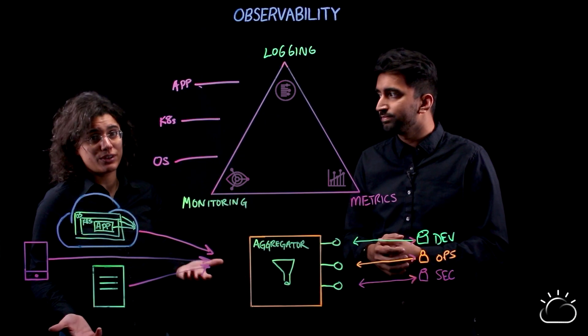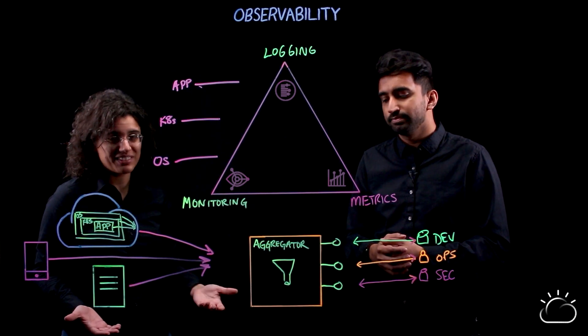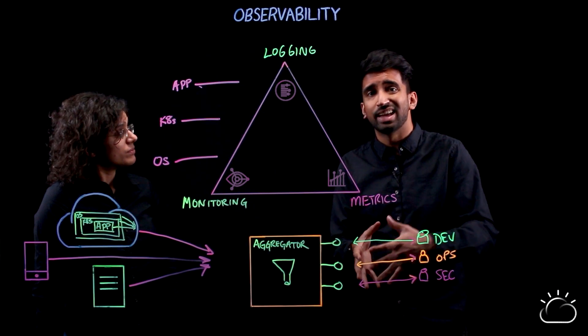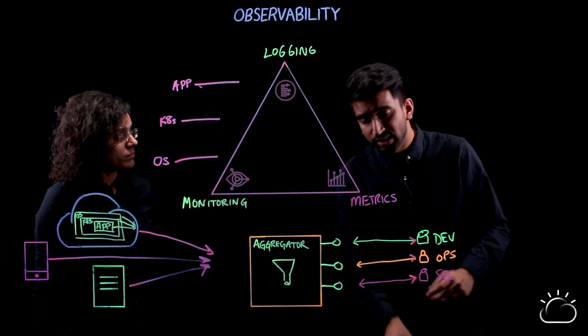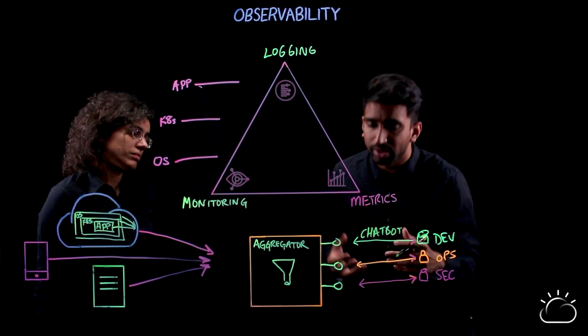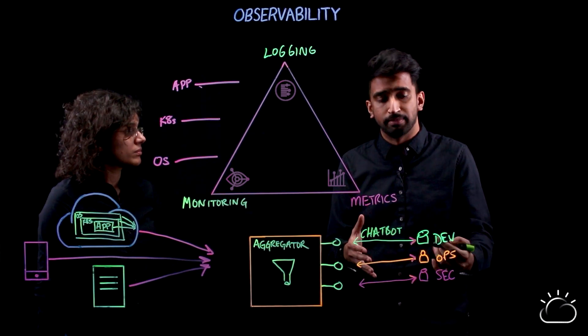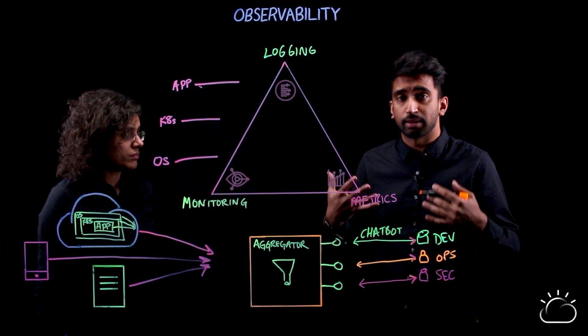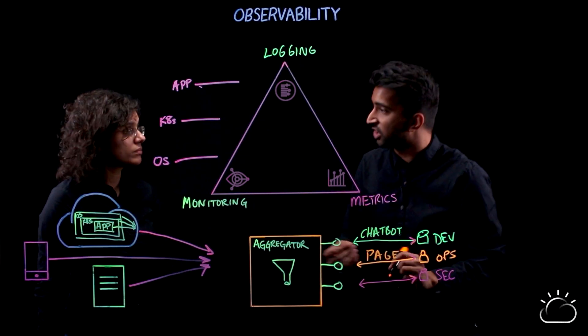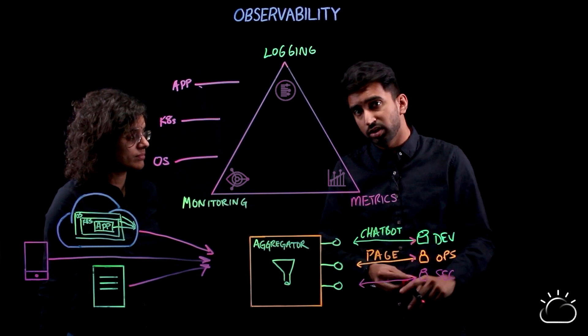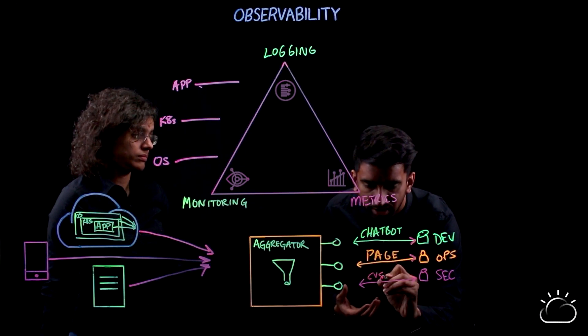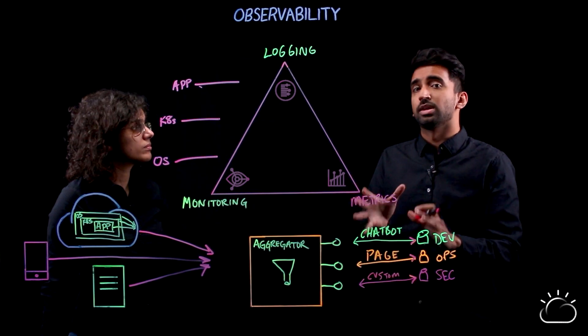An ops team doesn't want to find out that there's a degradation of service when their user does. They need to know ahead of time. So a good observability solution should have the ability to externalize the data and then additionally set up alerting on top of that. So our dev team, maybe they're most comfortable in Slack. So they set up a chat bot so that particular exceptions when they're thrown, they're able to know when they happen. Your ops team, maybe they're using something like a paging system so that, you know, in the middle of the night if something goes down, they get an alert and they can start looking into it right away. And then finally, for our security teams, kind of as I mentioned, they're generally using, you know, maybe third-party tools or custom dashboards. They can set up custom alerting so they can know exactly when something goes down.